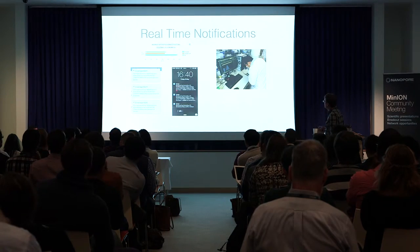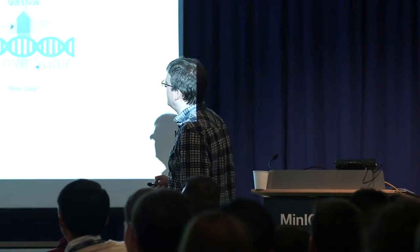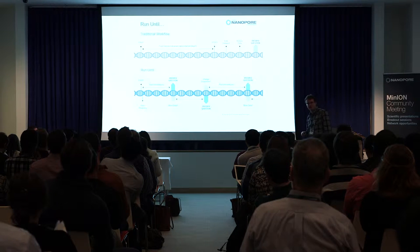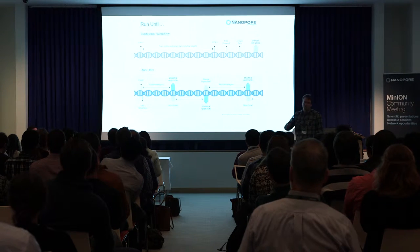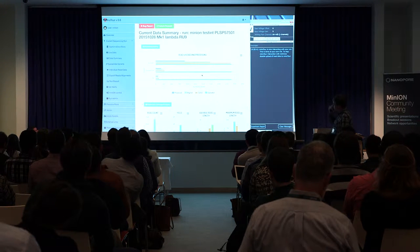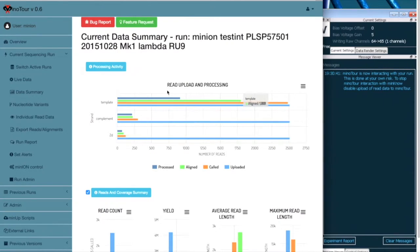A notification came through on Friday afternoon when I wasn't in the lab, so I had to phone Sunir and ask him to do something. But really, it would be nice to not need him to do anything. This is the idea that Nanopore described — doing real-time analysis, then changing the question, doing something different, and changing the way your experiment is running. So we've tried to build that in. This is a video showing two-way communication between Minotaur running on one computer and MinKNOW running on another.